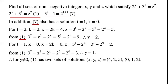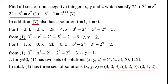So for y not equal to 0, equation 1 has two sets of solutions: (x, y, z) equals (4, 2, 5) and (0, 1, 2). In total, equation 1 has three sets of solutions: (x, y, z) equals (3, 0, 3), (4, 2, 5), and (0, 1, 2).